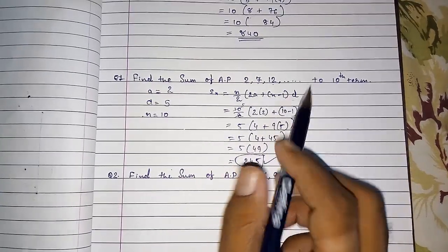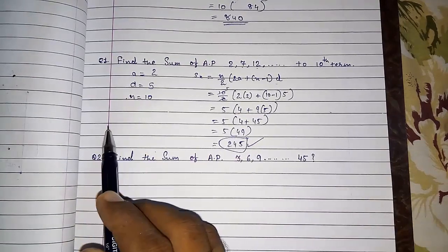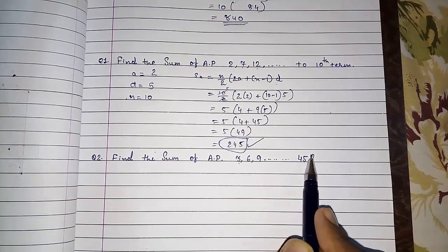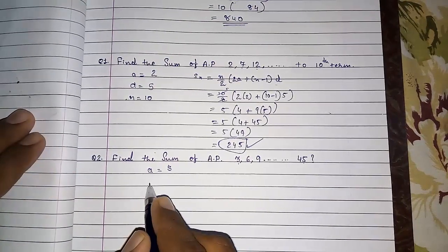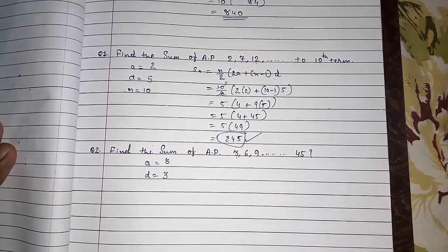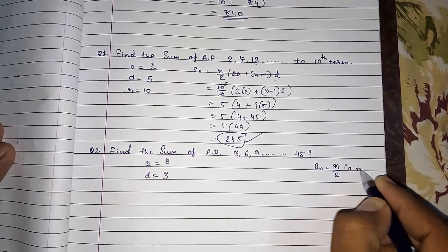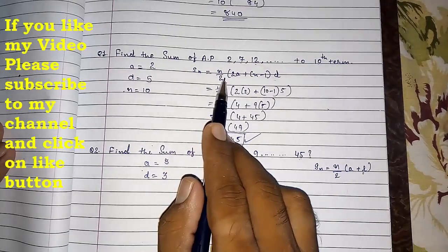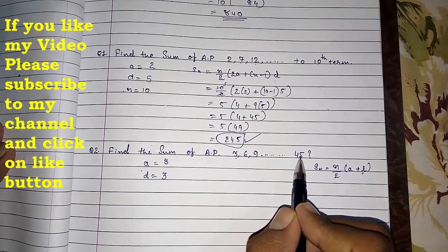We also have the second formula S_n = (n/2) × (a + l), which we will use in the next sum. This one is a little more difficult because we have to find some values first. The AP is 3, 6, 9, ... up to 45. Here the first term a = 3 and the common difference d = 3, but they have not told us which term 45 is — so we don't have n. Without n we cannot use the formula directly.